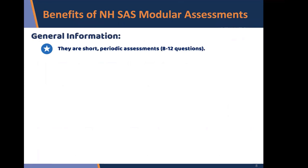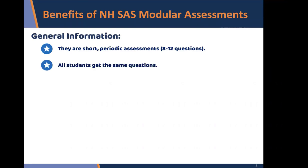They're short and periodic assessments — it says eight to twelve questions, but the ELA is more like twenty to twenty-two questions, because they have a lot of different questions for a set of passages. The editing has fewer, but reading literature and reading informational text have a few more. All students get the same questions, so unlike interim or summative data where not everybody gets the exact same questions, with the modulars they do. This makes it very easy to see which specific standards students need more help with.